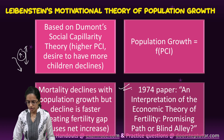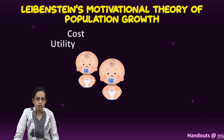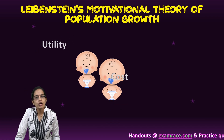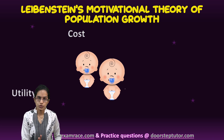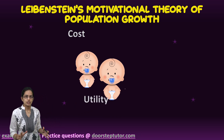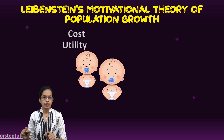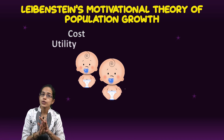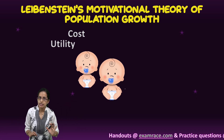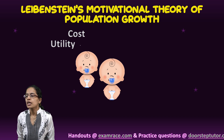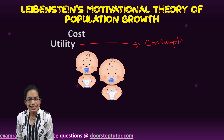His two major concepts are based on utility and cost. When he talked about utility, he said it comprises three types. The first is consumption utility — the utility derived from the love and pleasure of a child. This utility remains constant regardless of how rich a person may be or how much per capita income increases.